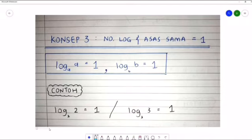Konsep yang ketiga adalah nombor log dan asas yang sama akan bersamaan dengan 1. Secara umumnya, log A asas A akan bersamaan dengan 1, kerana nombor log dan nombor asas log adalah sama. Contoh: log 2 asas 2 akan bersamaan dengan 1.